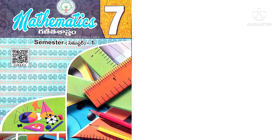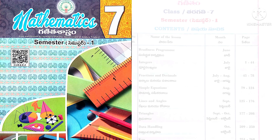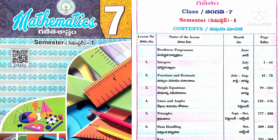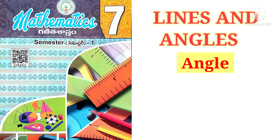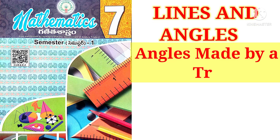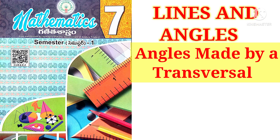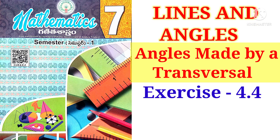Welcome to Shaker Maths. Today we are going to learn 7th class mathematics, 4th chapter for lines and angles — angles made by a transversal, Exercise 4.4.